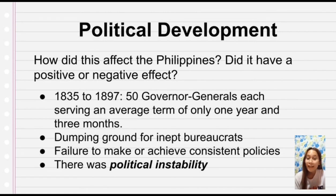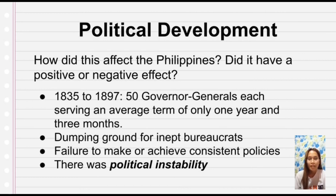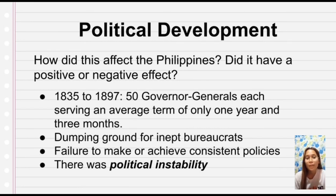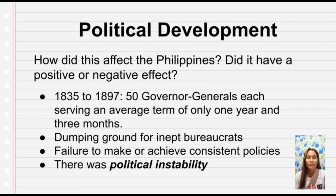There was political instability in Spain because of the struggle between liberals and conservatives. How did this affect the Philippines — did it have a positive or negative effect? It definitely had a negative effect. One of the negative effects of the political instability in Spain was the constant practice of replacing governor-generals. From 1853 to 1898, there were 41 governor-generals in a span of 45 years.